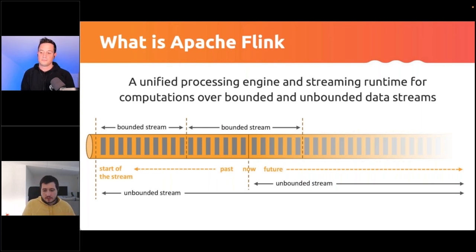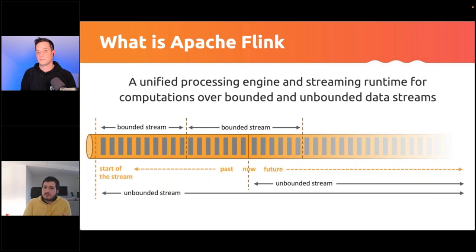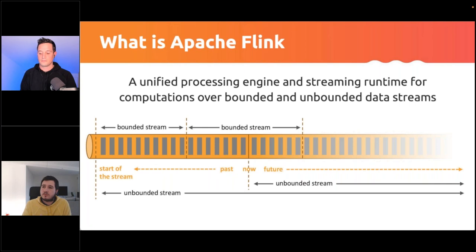Low latency, high throughput, and high fault tolerance are really key to the success of Apache Flink — and these are the same things that data streaming and event-driven architectures seek to optimize. Flink and Kafka are actually best friends. And given its vibrant open-source community, it also helps solve a lot of headaches around integrations, integrating with a very wide range of storage and messaging systems, including Kafka. It has a much richer set of integration capabilities out of the box.